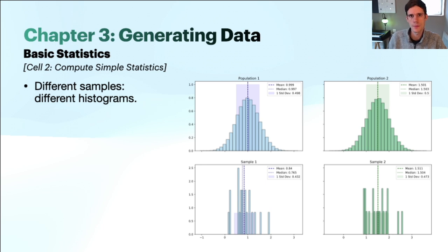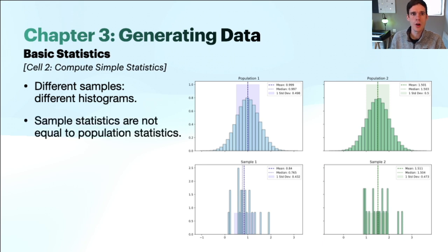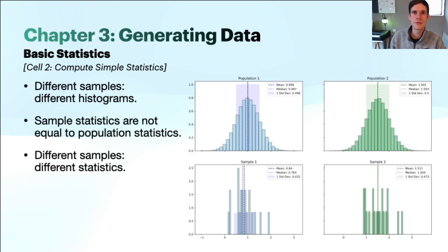In this final lesson concluding our chapter on generating data, we bring together all the ideas and tools from previous lessons. We learned by visualizing histograms that a sample histogram is very different from the histogram of the underlying population, and that each time we generate different samples, their histograms will differ. We calculated basic statistics — the mean, variance, and median — and saw these are notably different from those of the underlying populations, making sample statistics an approximation of population statistics. Different samples give rise to different statistics each time.